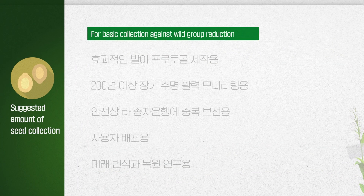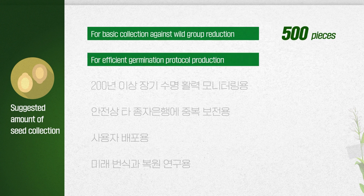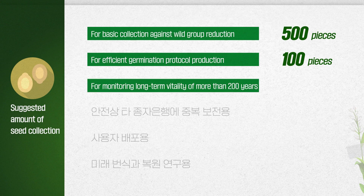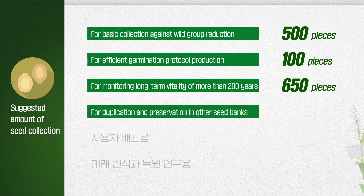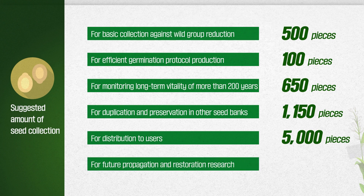Ideally, it is suggested that 500 pieces are collected for basic collection against the reduction of a wild-grown population; 100 pieces for efficient germination protocol; 650 pieces for monitoring long-term vitality of more than 200 years; at least 1,150 pieces for duplication and preservation in other seed banks for redundancy purposes; 5,000 pieces for distribution to users; and at least 2,500 pieces for future propagation and restoration studies.